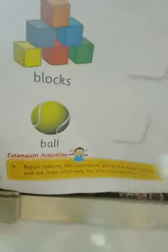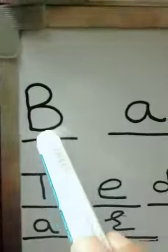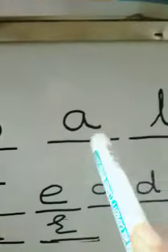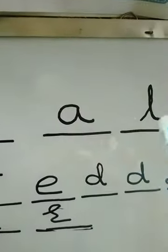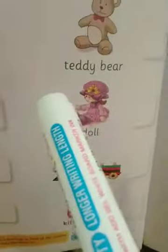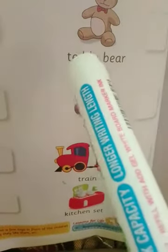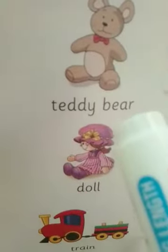Ball ko hum Urdu mein kya kehti hain? Ball ko hum Urdu mein 'gend' kehti hain. And ball is spelled as B-A-L-L. This is teddy bear — T-E-D-D-Y, teddy, B-E-A-R, teddy bear.